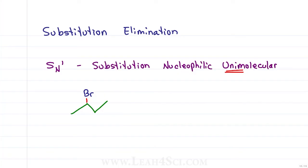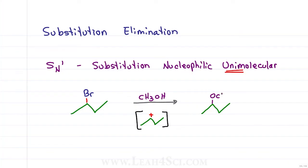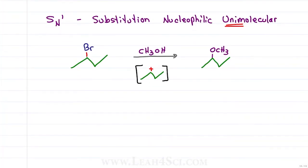SN1 is a very slow reaction with a carbocation intermediate — the more substituted the carbocation, the faster (or less slow) the reaction. This is often a solvolysis reaction where the solvent — in this case methanol — acts as both the solution and the nucleophile, giving us OCH3 in place of the leaving group. The rate of an SN1 reaction equals the rate constant k times the concentration of the alkyl group or substrate.